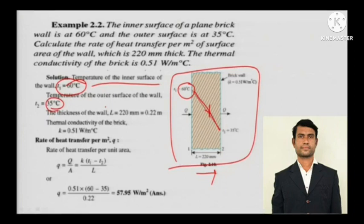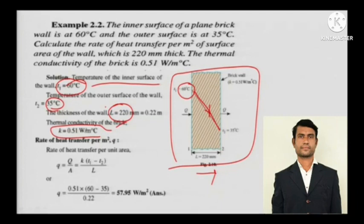It's already given in the numerical. You have to chart out what's given, what's not, and what you need to attack first. The thickness of the wall L is 220 mm. The thermal conductivity of the brick — everything is provided. You should know Fourier's law by this time: it is Q equals minus k A dt by dx.